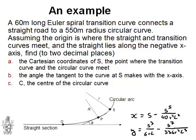Now, let's have a look at this question together. We have a 60 meter long Euler spiral transition curve. The Euler transition curve is also called the Euler spiral transition curve. It connects a straight road to a 550 meter radius circular curve.